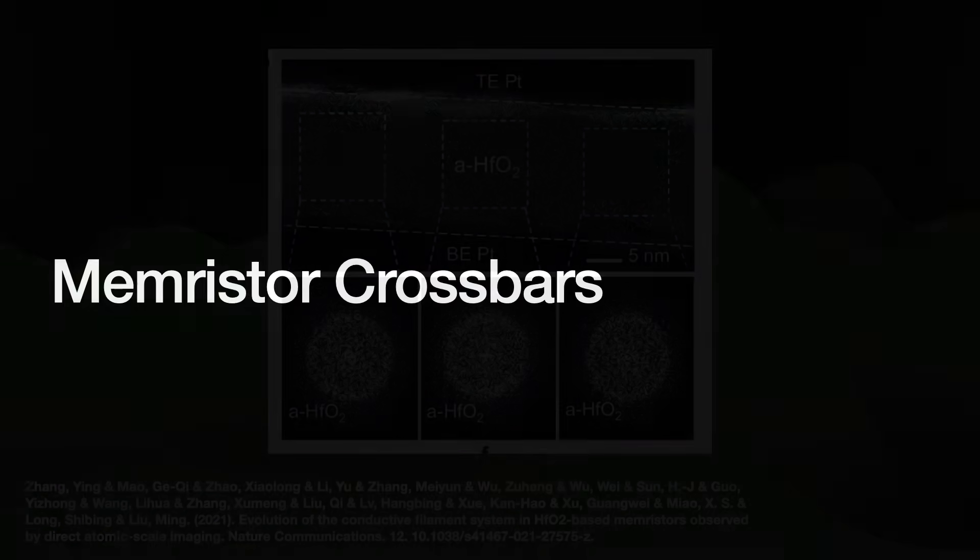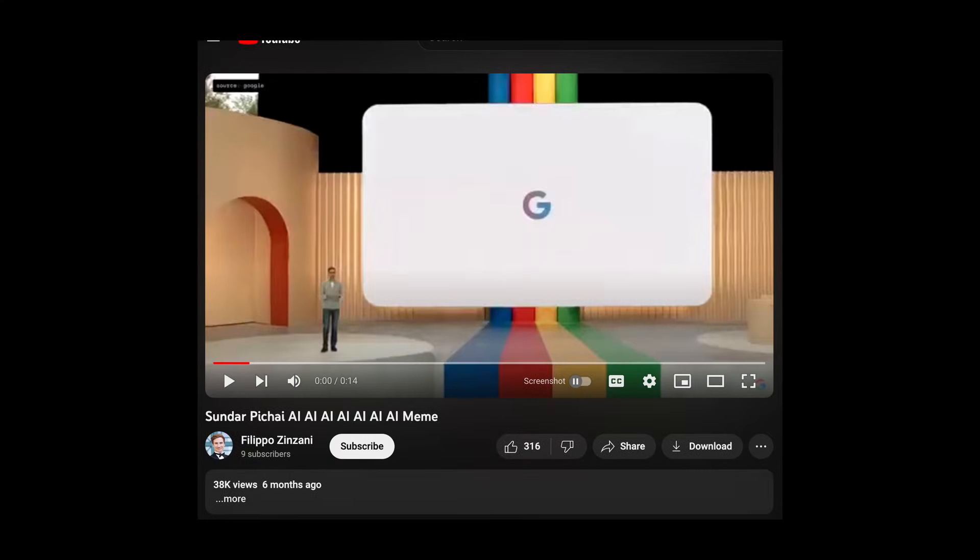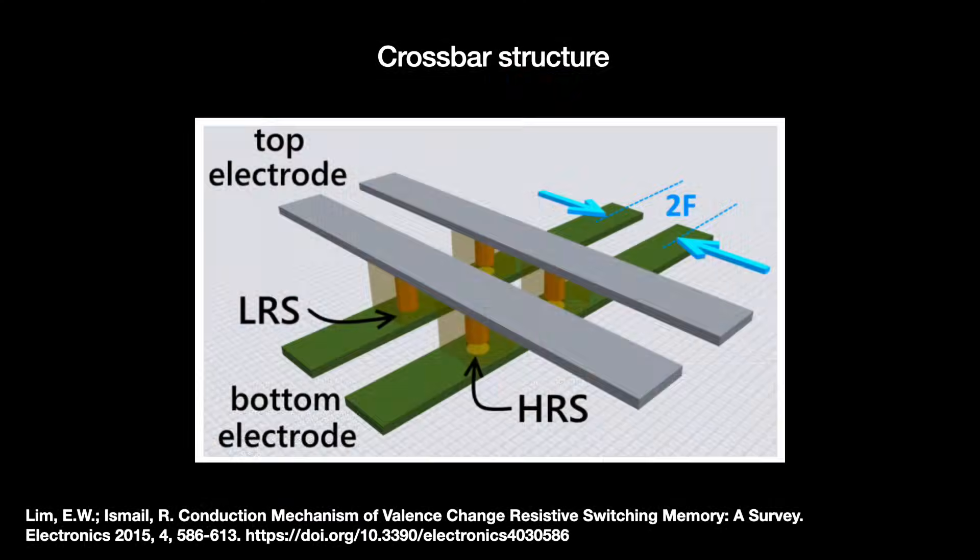Memristors have many interesting applications to computation, but we're here to talk about AI. So let's talk about how we can use these to do neural network calculations as a compute-in-memory solution. This is done by first connecting together these bad boys in a crossbar pattern.